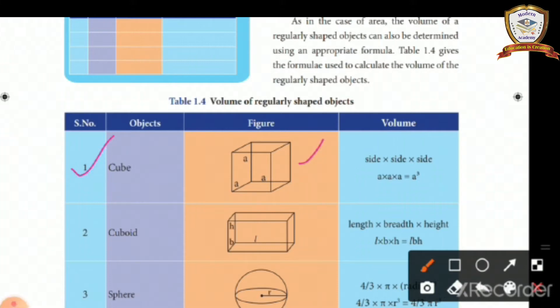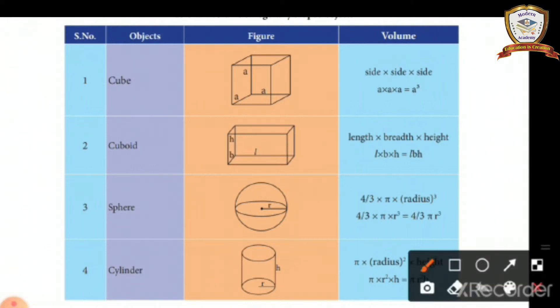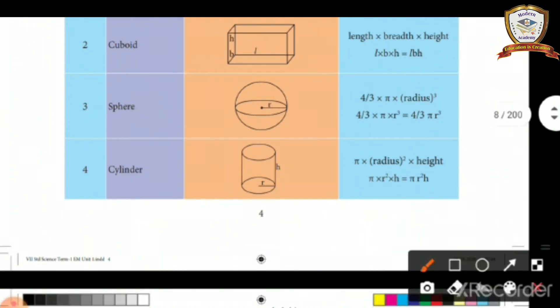Table 1.4 gives the formula used to calculate the volume of regularly shaped objects. First one is cube: side × side × side. Next cuboid: length × breadth × height (LBH). Next sphere: 4/3 π R³. Next cylinder: π R² H.